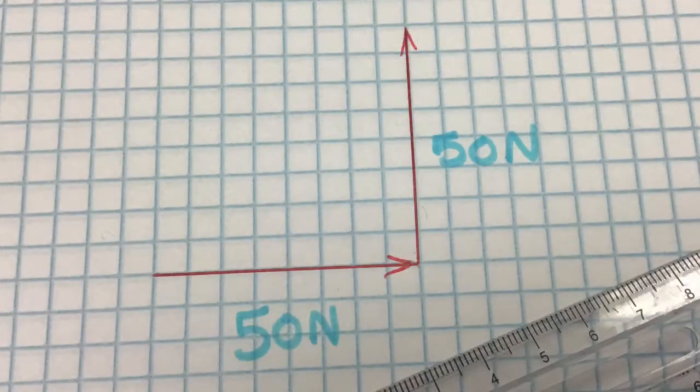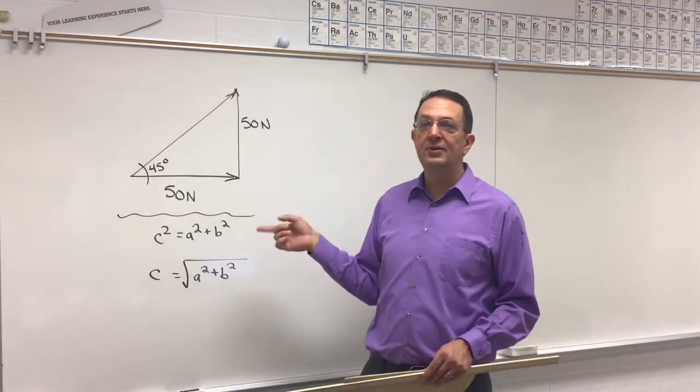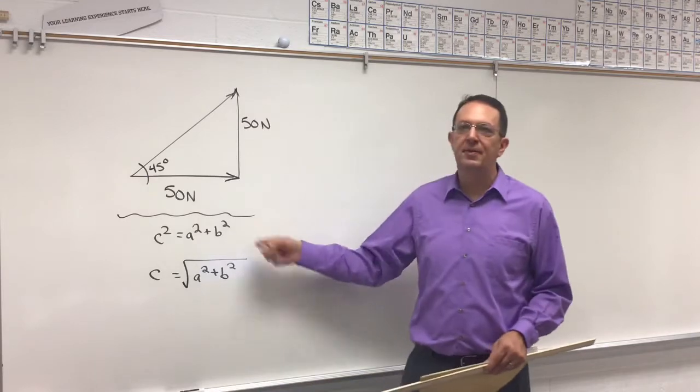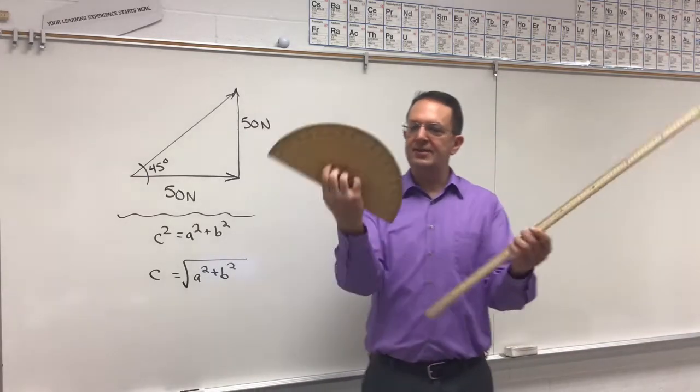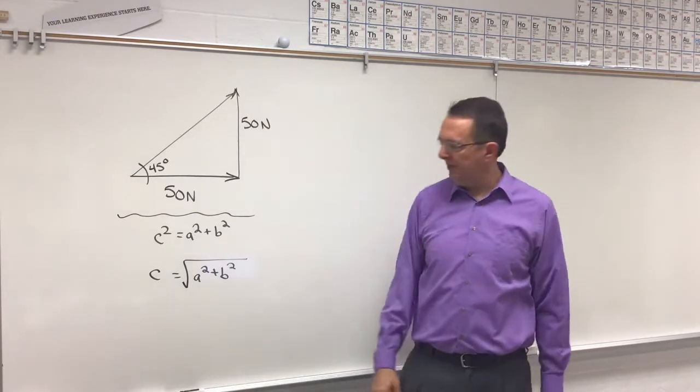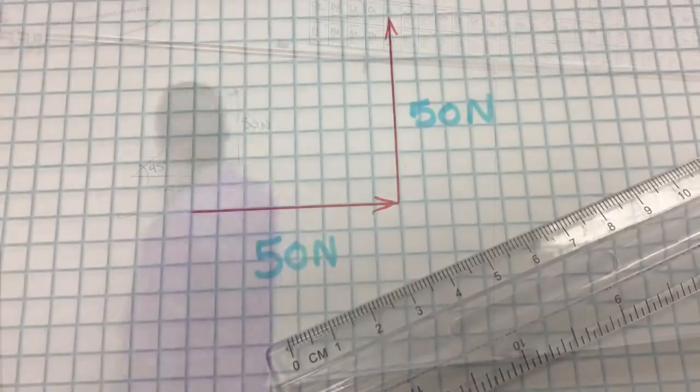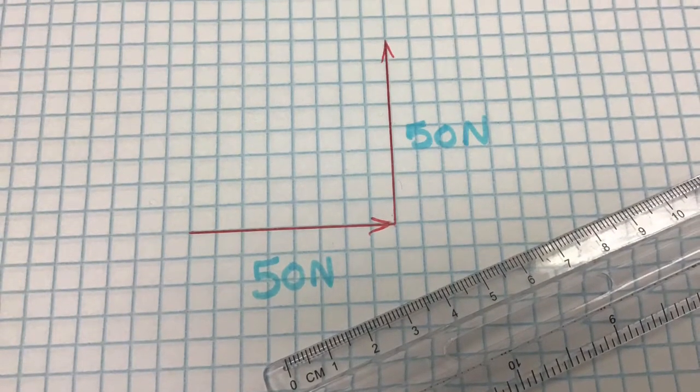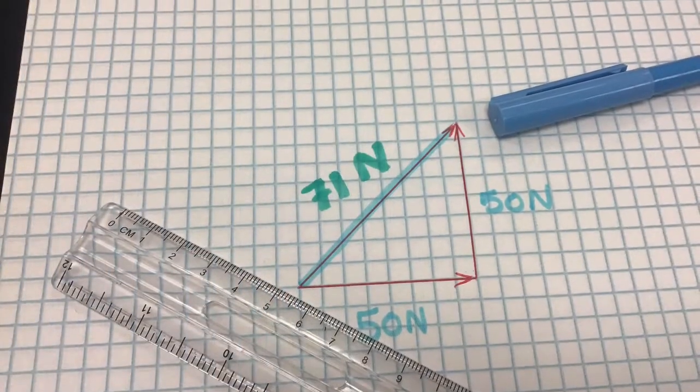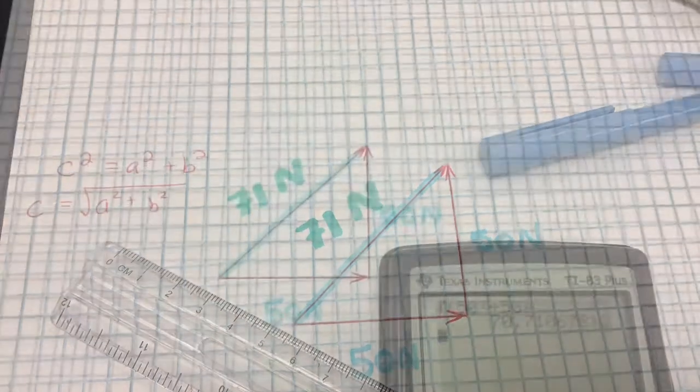This is one way to draw those two parts sketched to scale. It turns out that these two forces, the 50 and the 50, when added follow right triangle rules and you can either use the Pythagorean theorem or sketch a scaled triangle on graph paper to find the answer. If it's 50 newtons forward and 50 newtons upward, you end up with 71 newtons.